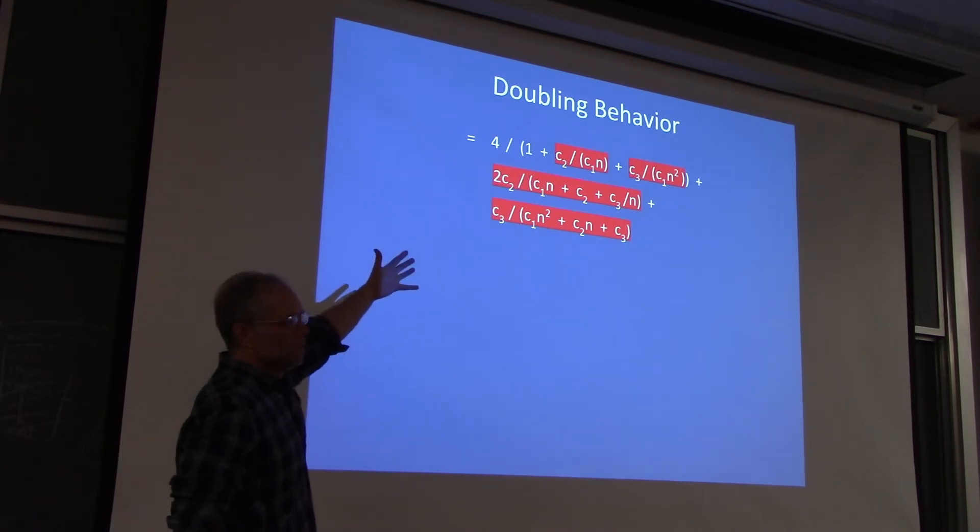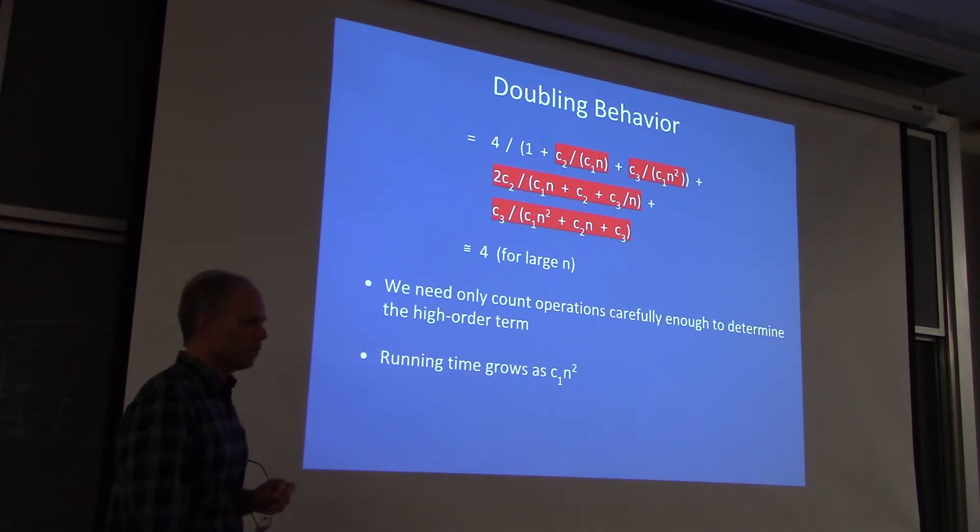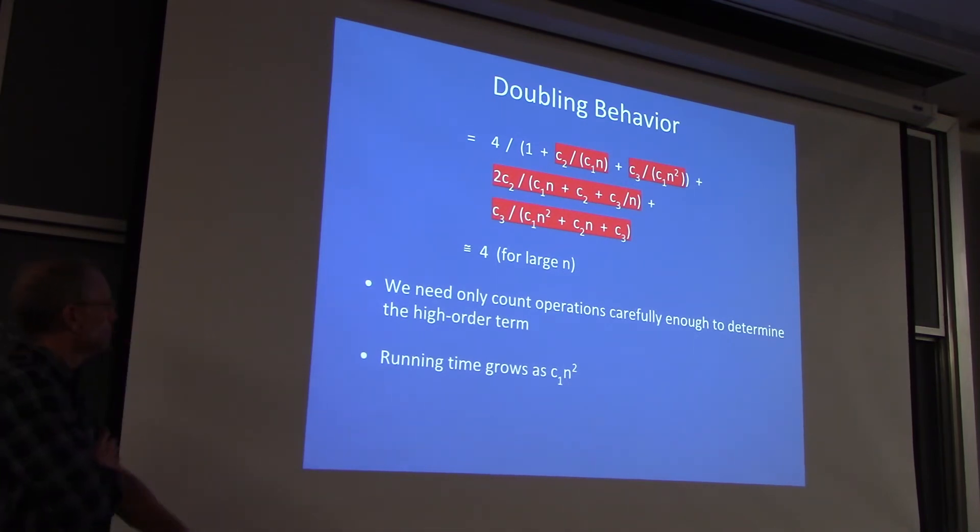So for small n, it's hard to say what the doubling behavior is. For large n, which is what we care about in this business, we can treat those things in red as if they're 0. Because they become less and less significant as n gets bigger. If you do that, you just got 4 divided by 1 plus 0 plus 0. So you got 4. So we figured out the doubling behavior. Does it quadruple? Yeah. It's quadruple. So you double the size of the array, quadruple is the time it takes to sort.